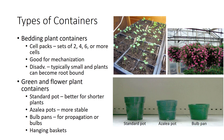Bedding plants are generally grown in bedding plant containers, or cell packs, which can vary in size but typically come in sets of two, four, six, or more cells. The main advantage of bedding plant containers is that they lend themselves to mechanization. However, the main disadvantage is that the cells are typically small and plants may become root-bound if left too long, which may lead to transplant shock.